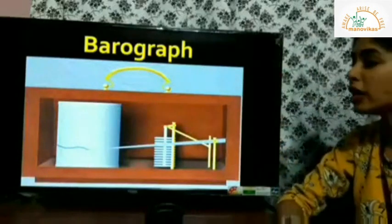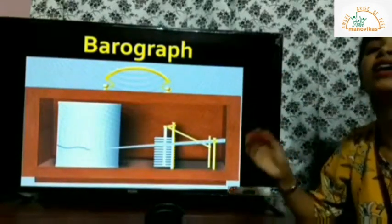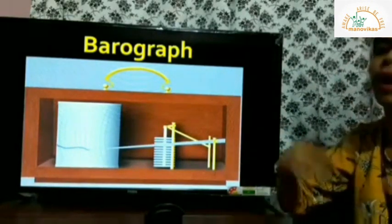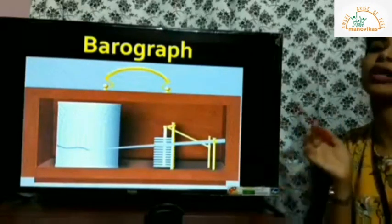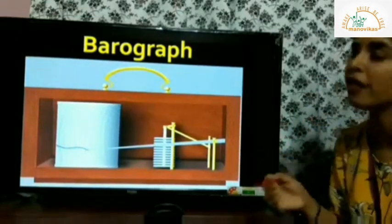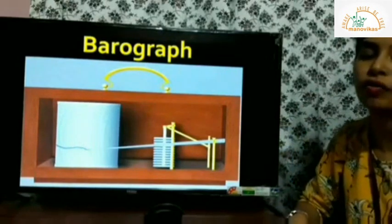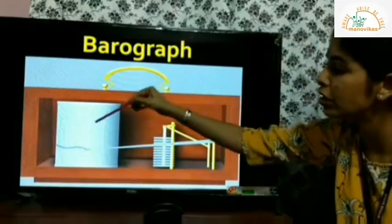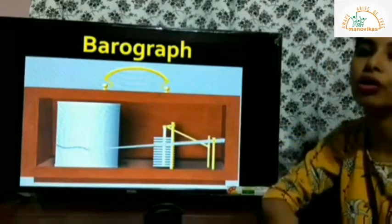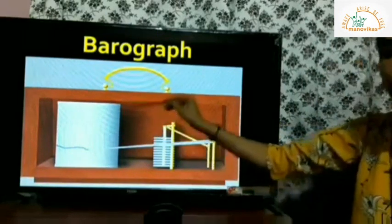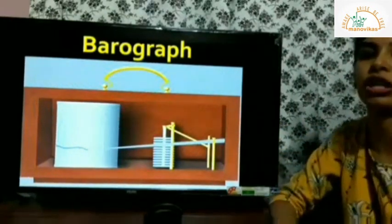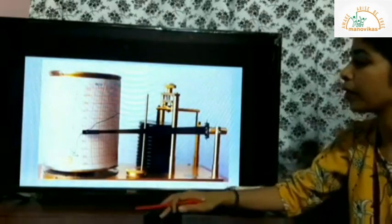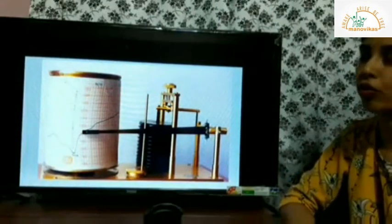A barograph is a device that can automatically record air pressure. Just as we have a thermograph for temperature, for pressure we have a barograph. The drum continuously rotates containing the graph paper and a pointer continuously records the pressure changes or pressure fluctuations.